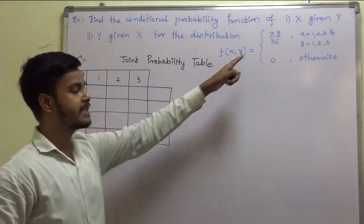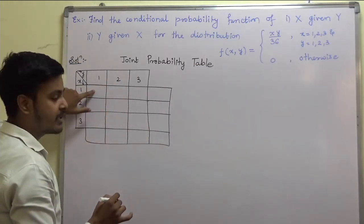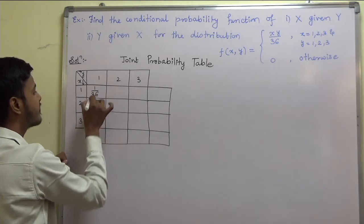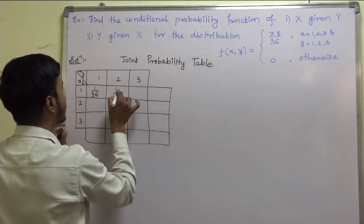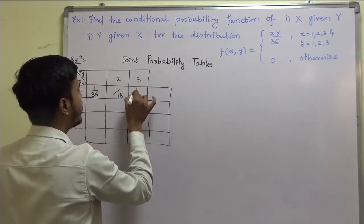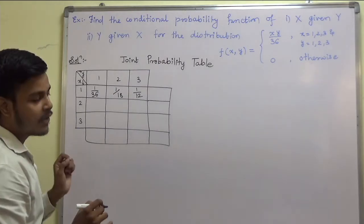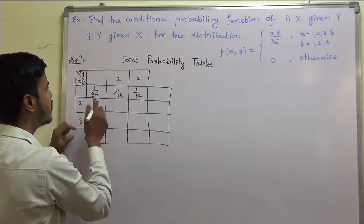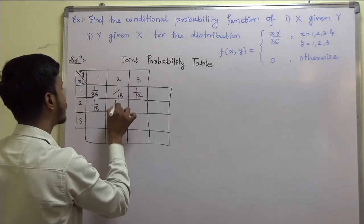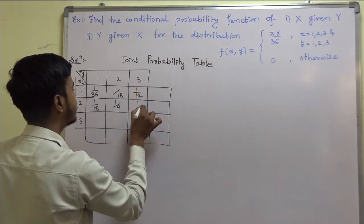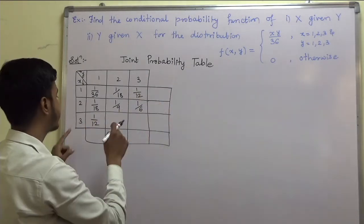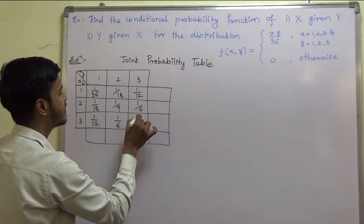Now let us fill in the table. For X=1, Y=1 the joint probability is 1/36. For X=1, Y=2 it is 1/18. For X=1, Y=3 it is 1/12. For X=2, Y=1 it is 1/18. For X=2, Y=2 it is 1/9. For X=2, Y=3 it is 1/6. For X=3, Y=1 it is 1/12. For X=3, Y=2 it is 1/6. And for X=3, Y=3 it is 1/4.